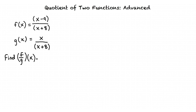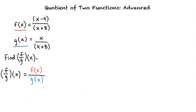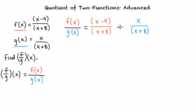Looking at our problem, we can see that we need to divide f of x by g of x. With this information, we can rewrite our equation as f of x divided by g of x. We already know what f of x and g of x equal, so let's substitute them into our equation. The result is f of x, which equals x minus 9 divided by x plus 8, divided by g of x, which equals x divided by x plus 8.